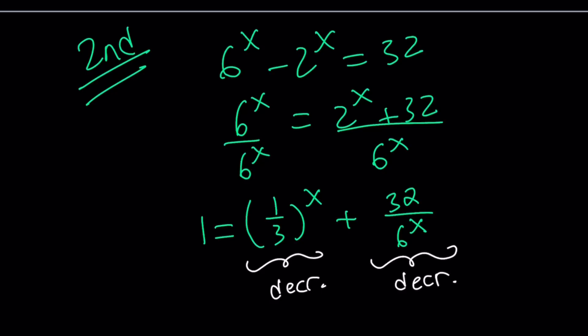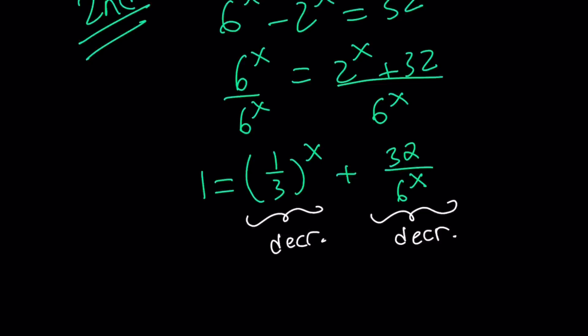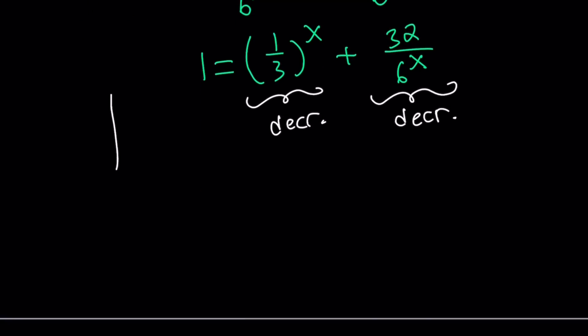Their sum is also decreasing, right? Which means, and think about it, like you have a decreasing function and a horizontal line. They're going to intersect at a single point, which means you're only going to have a single, single solution. And that is at x equals 2, as we've seen before, because x equals 2 works. Awesome. Now, let's go ahead and take a look at the graph, and we'll finish up.